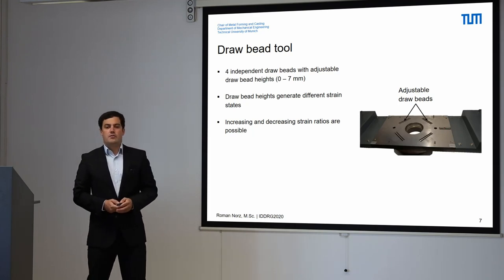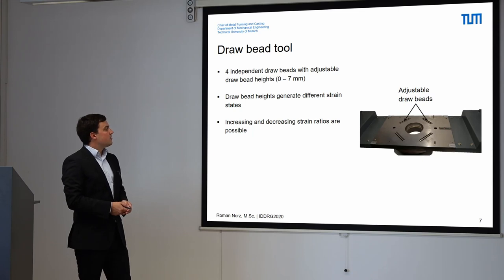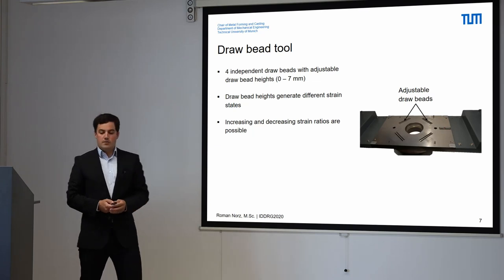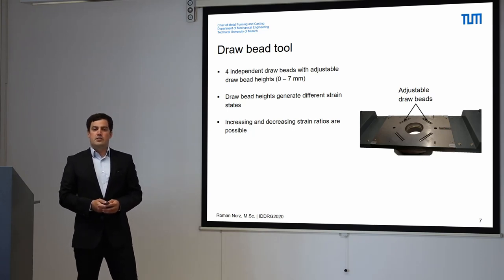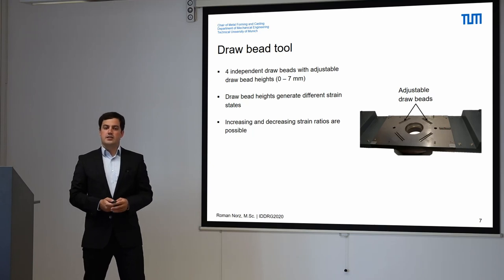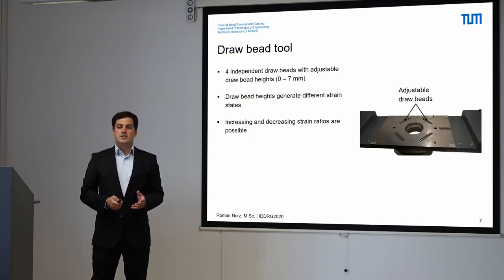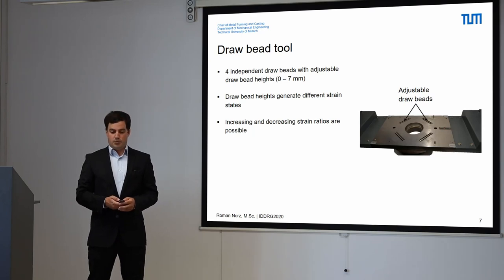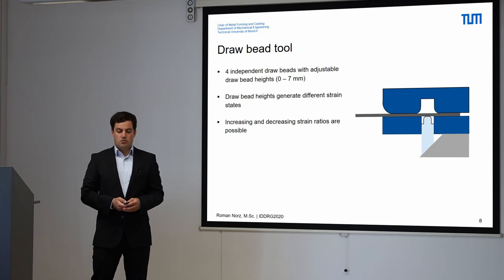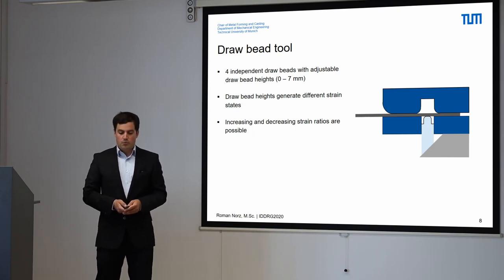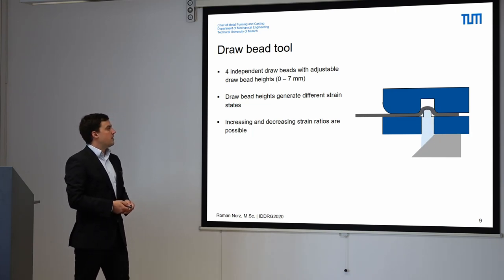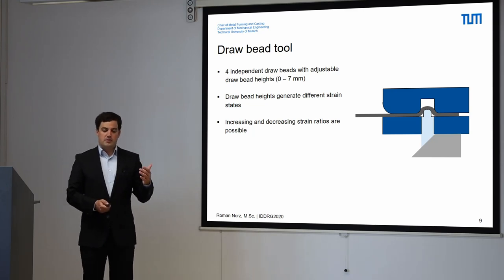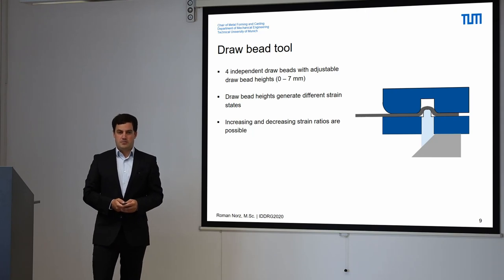At our institute, we have developed a draw bead tool consisting of four independent draw beads, which have an adjustable height from 0 to 7 mm. The draw beads generate different strain ratios and strain states inside the specimen, and therefore increasing and decreasing strain path ratios are possible. The height of these draw beads is adjusted by a wedge which is pushed against the draw bead and therefore leads to the rise of the draw bead. The higher the draw bead, the stronger the retention forces in the arms of the specimens are.